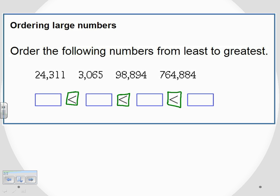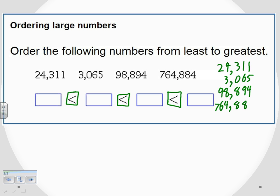To put these numbers in order, the first thing I want to do is line them up so I can get a good comparison. Over here on the right, I'm going to write them vertically, being careful to line them up in columns with digits that line up on the right hand side. So: 24,311, then 3,065, then 98,894, and then 764,884.